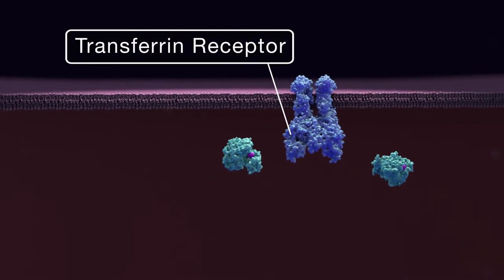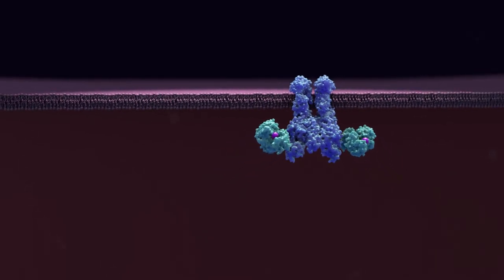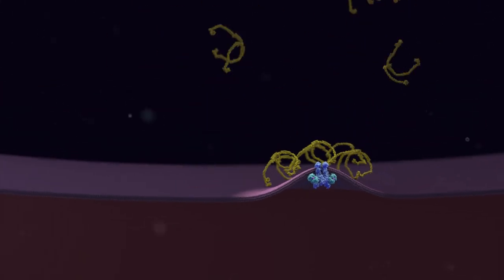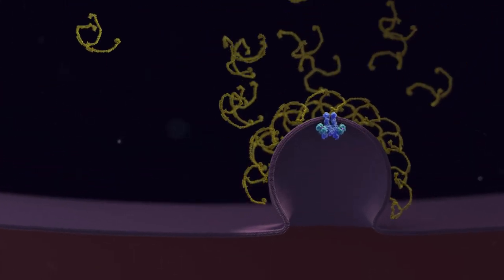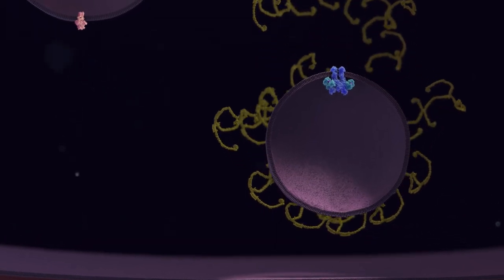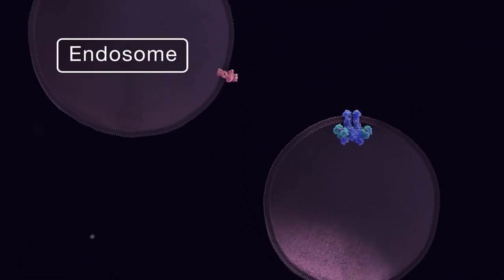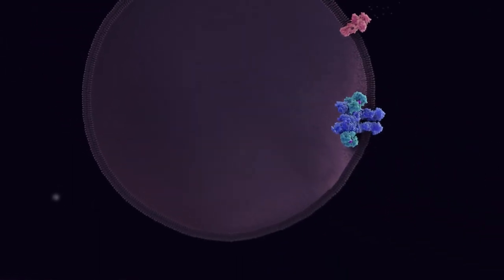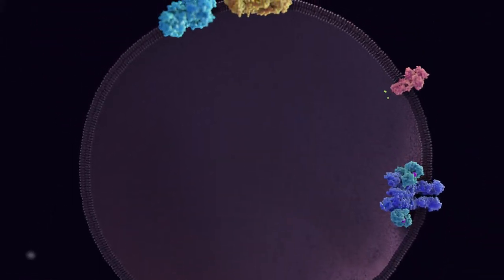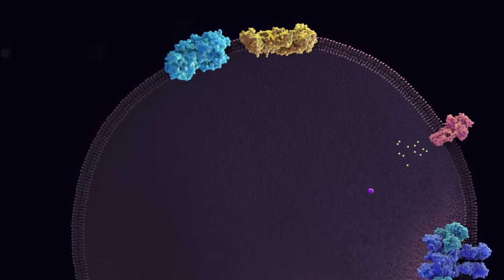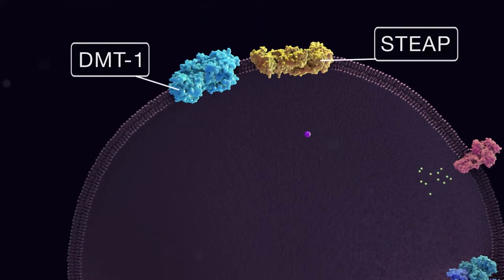Iron bound to transferrin is also transported into the intestinal cell at the basolateral membrane. The holotransferrin binds to the transferrin receptor and is taken into the cell via receptor-mediated endocytosis. The vesicle fuses with an endosome. The vesicle becomes acidic and the transferrin releases its ferric iron.